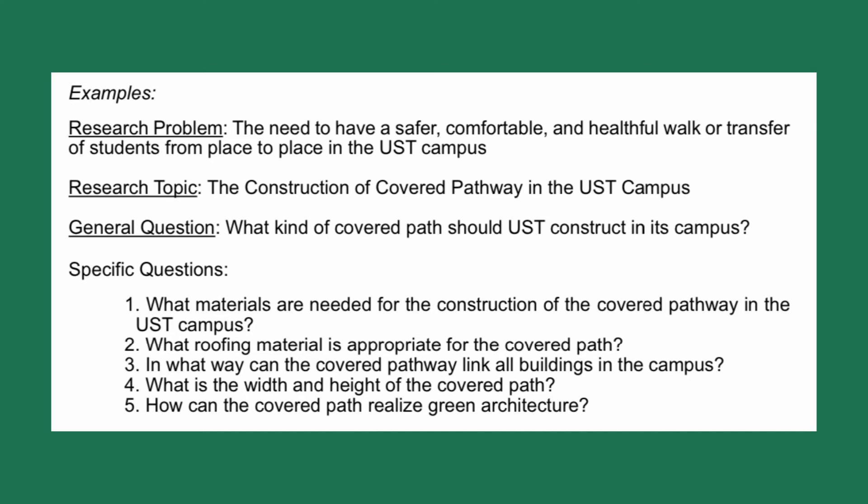After the general question, you must think of specific questions. Number 1: What materials are needed for the construction of the covered pathway in the UST campus? Number 2: What roofing material is appropriate for the covered path? Number 3: In what way can the covered pathway link all buildings in the campus? Number 4: What is the width and height of the covered path? Lastly: How can the covered path realize green architecture? Your specific questions will help you enrich the content of your research paper.